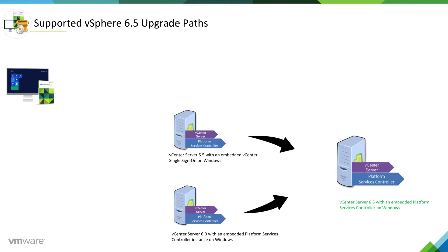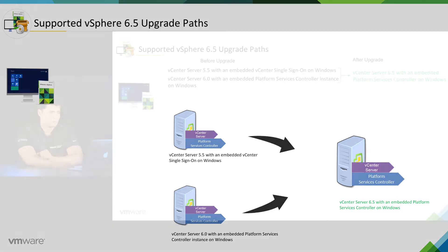Then let's say you have vCenter server 6.0 with an embedded platform services controller instance on Windows. You can upgrade this to vCenter server 6.5 with an embedded platform services controller on Windows.